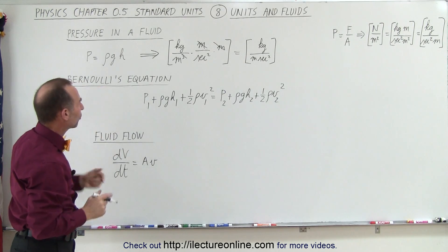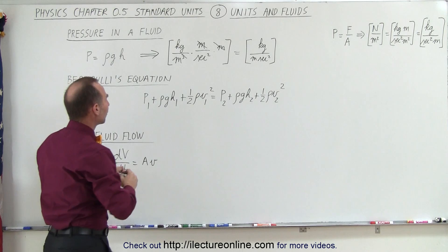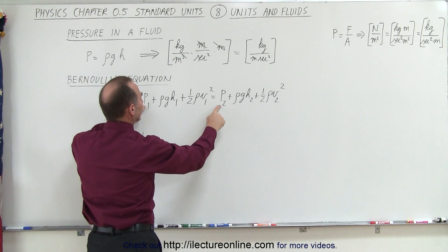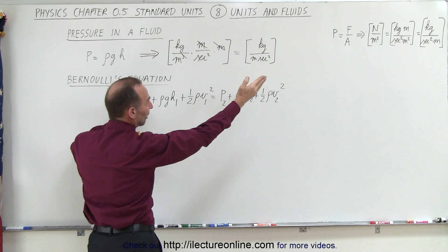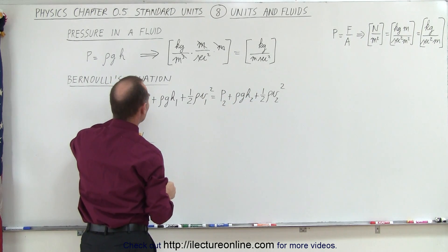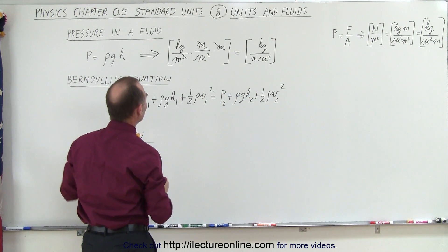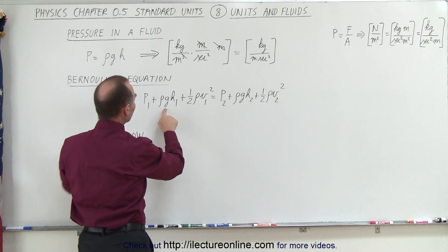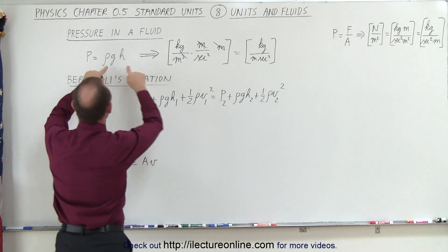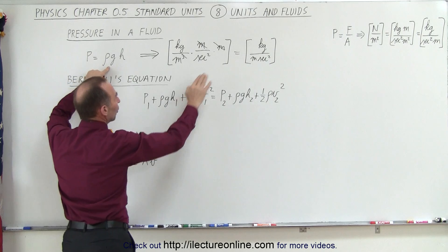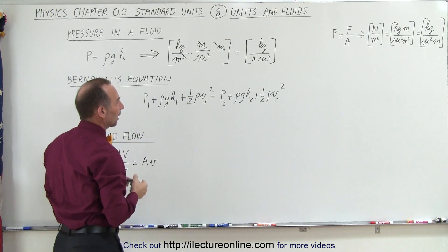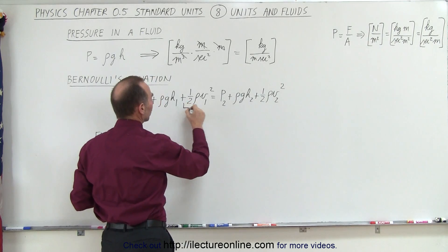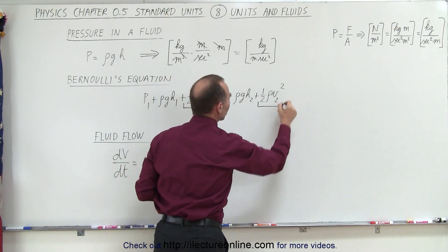When we look at Bernoulli's equation, notice that the first term on each side of the equation is the term of pressure, which should have units of kilograms per meter per second squared. And then here, the second term, notice that is exactly the same as what we have over there, which we just showed that also has the same units of kilograms per meter per second squared. Now the question is, does the third term also have the units of pressure?